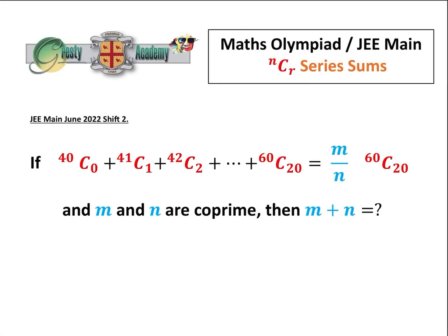This is quite an interesting question from the JEE Main June 2022 shift 2. We are asked to sum 40C0 add 41C1 add 42C2 and so on add 60C20, and it will come to M over N times 60C20. We've got to find what M and N are and then add them up and give the answer.